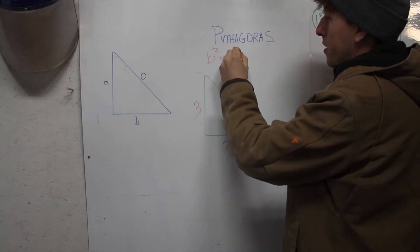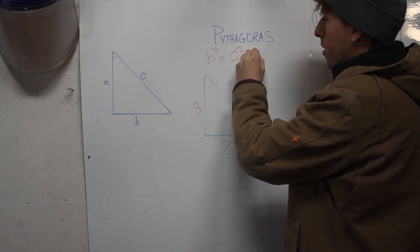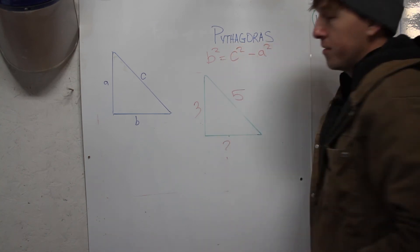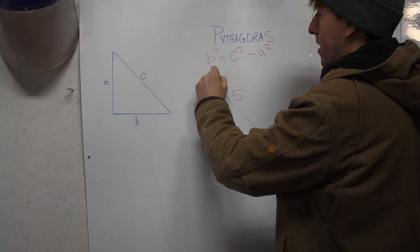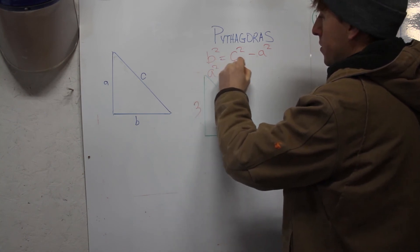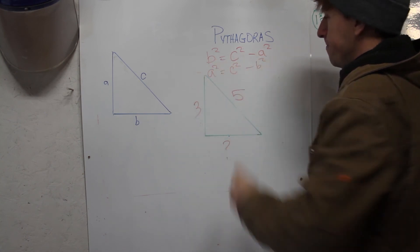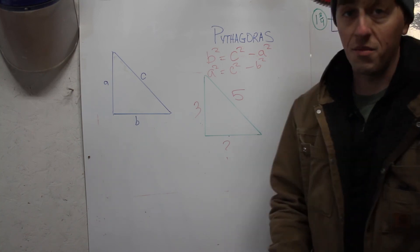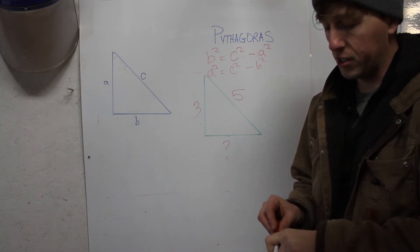What you actually have to do is change this to B squared equals C squared minus A squared. The same thing works if you need to find A squared: A squared equals C squared minus B squared. It's just the same thing except you're substituting out addition for subtraction.